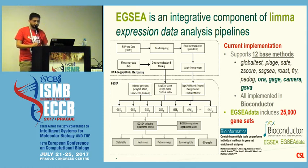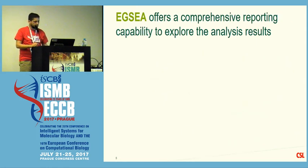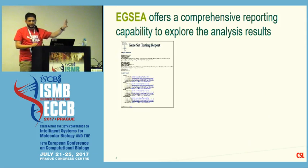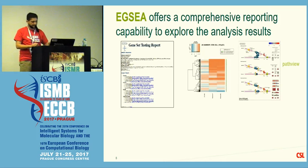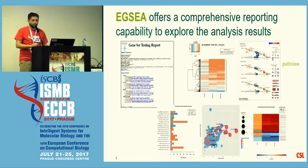Both EGSEA and EGSEA data are in the Bioconductor open source project. The main advantage of EGSEA over other gene set testing methods is its comprehensive reporting capability. When you run EGSEA, you end up with an HTML report. If running on multiple experimental conditions, each condition is shown in one group. If you use multiple gene set collections from MSigDB or GeneSetDB, you can view these in the report. We also generate heatmaps and pathway maps using the pathview package from Bioconductor.